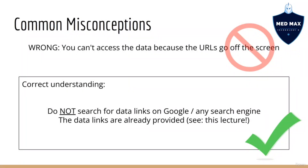The second thing students are getting wrong is that they think they can't access the data for this course because the URLs go off the screen in the videos. Again, this is not correct. You should not be typing URLs by hand — that is also a useless activity. Also, do not try to search for the data links on Google or any other search engine because you'll just end up getting the wrong data set. Instead, the data links have already been provided, as mentioned earlier in this lecture.